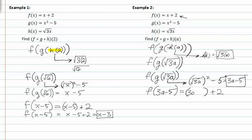Substituting three a minus five in for x, I get three a minus five plus two, or three a minus three. So f of g of h of a is equal to three a minus three.